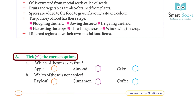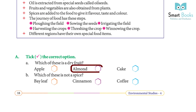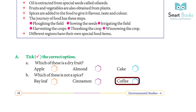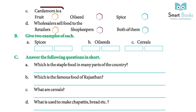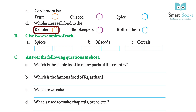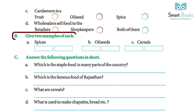Exercise — tick the correct option. Which of these is a dry fruit: apple, almond, or cake? Answer: almond. Which of these is not a spice: bay leaf, cinnamon, or coffee? Answer: coffee. Cardamom is a fruit, oil seed, or spice? Answer: spice. Wholesalers sell food to — retailers, shopkeepers, or both? Answer: retailers.